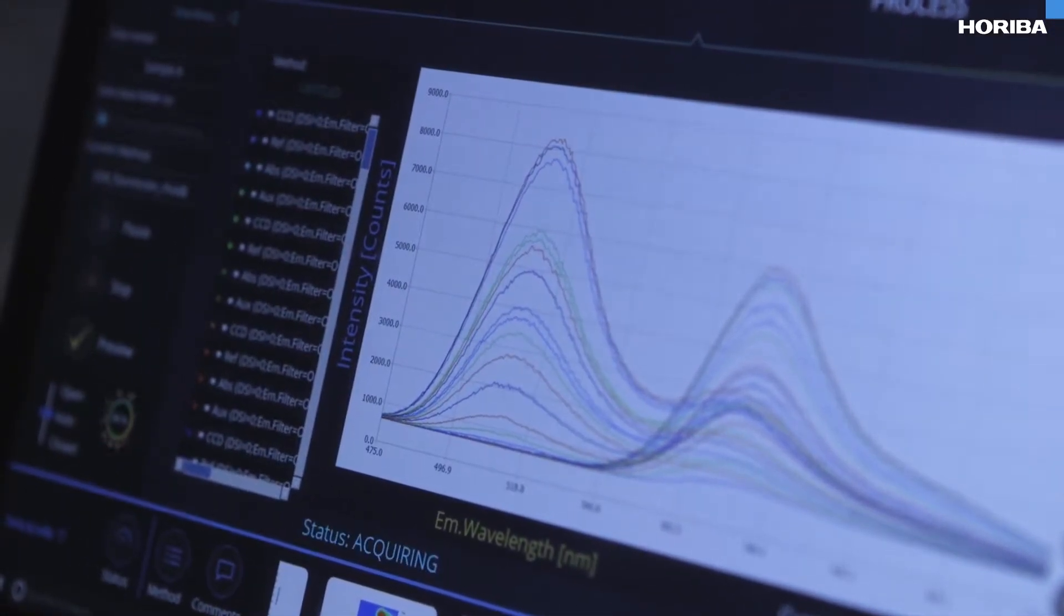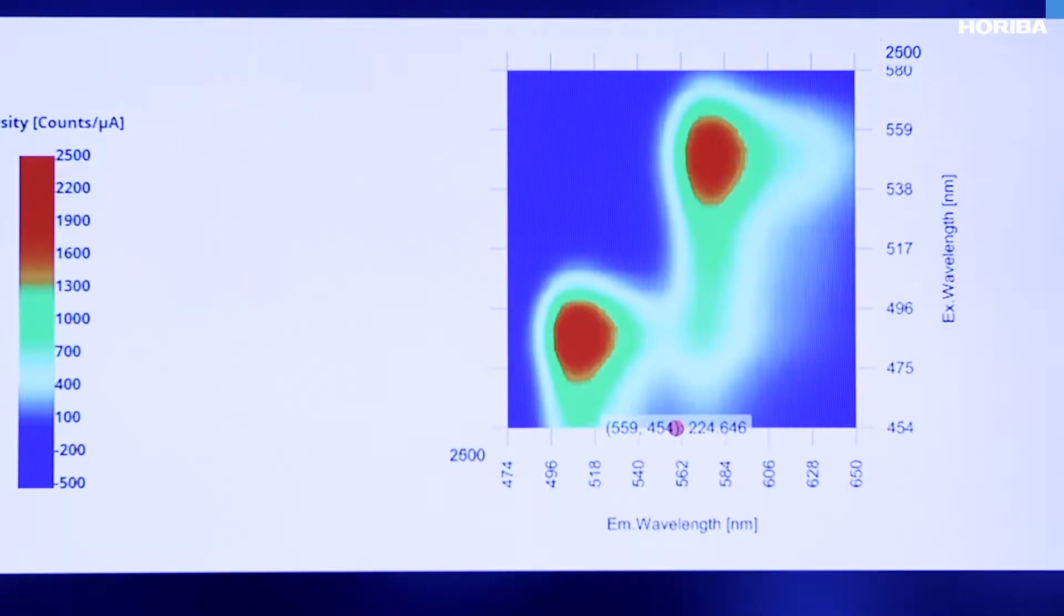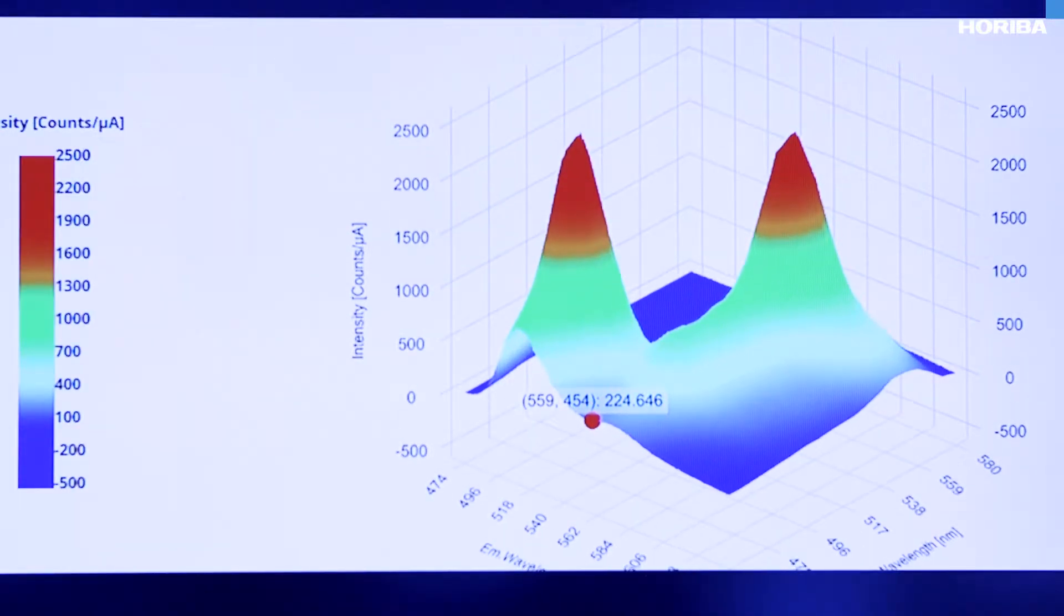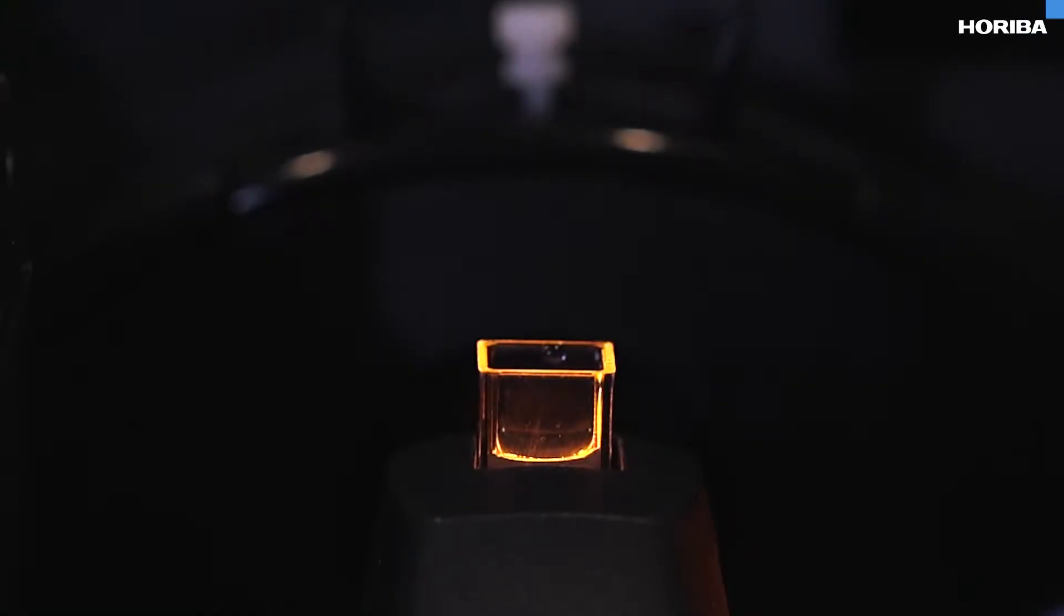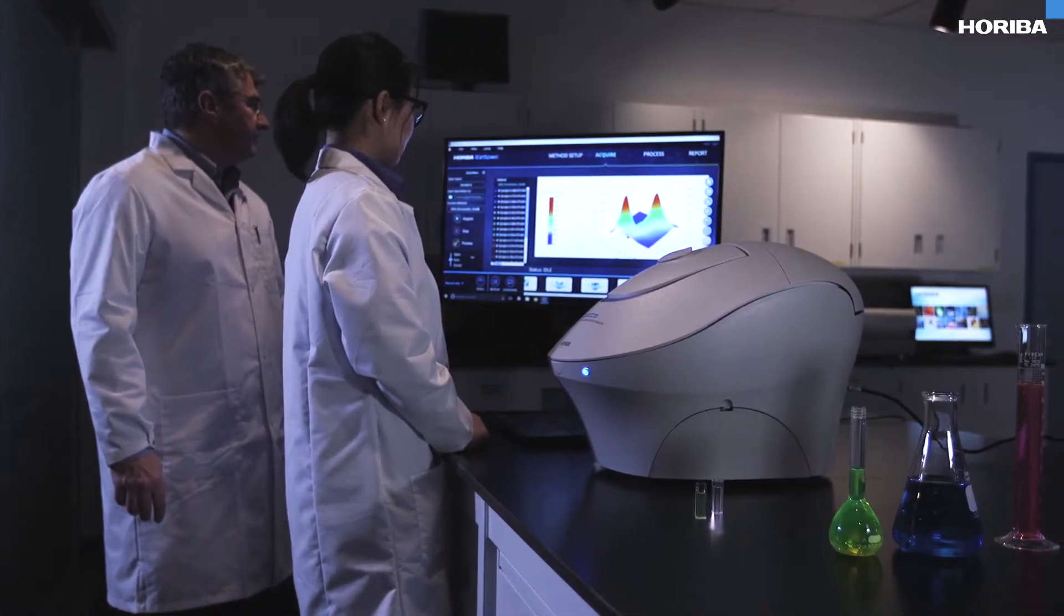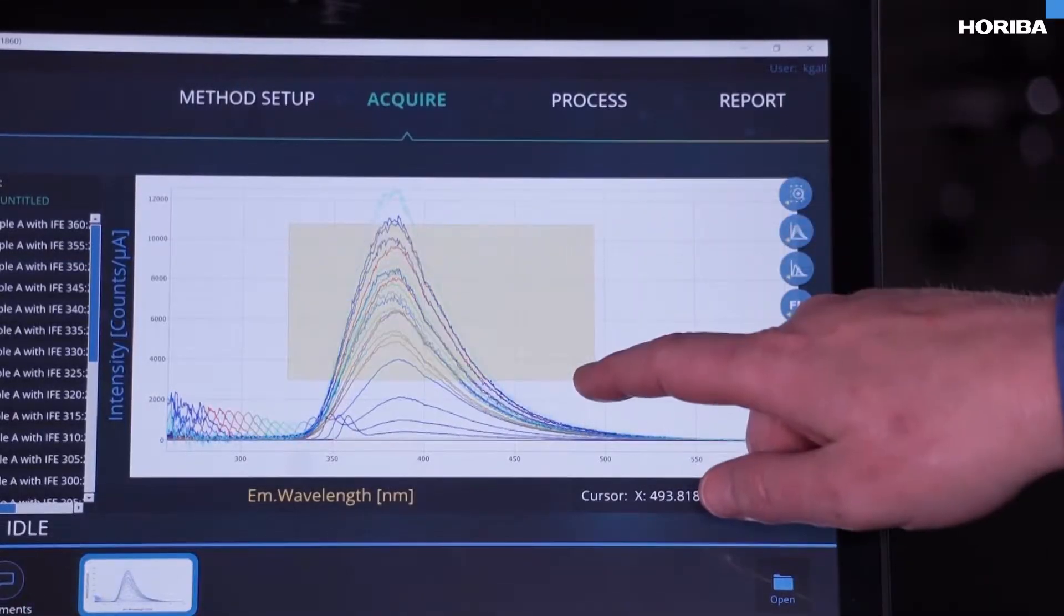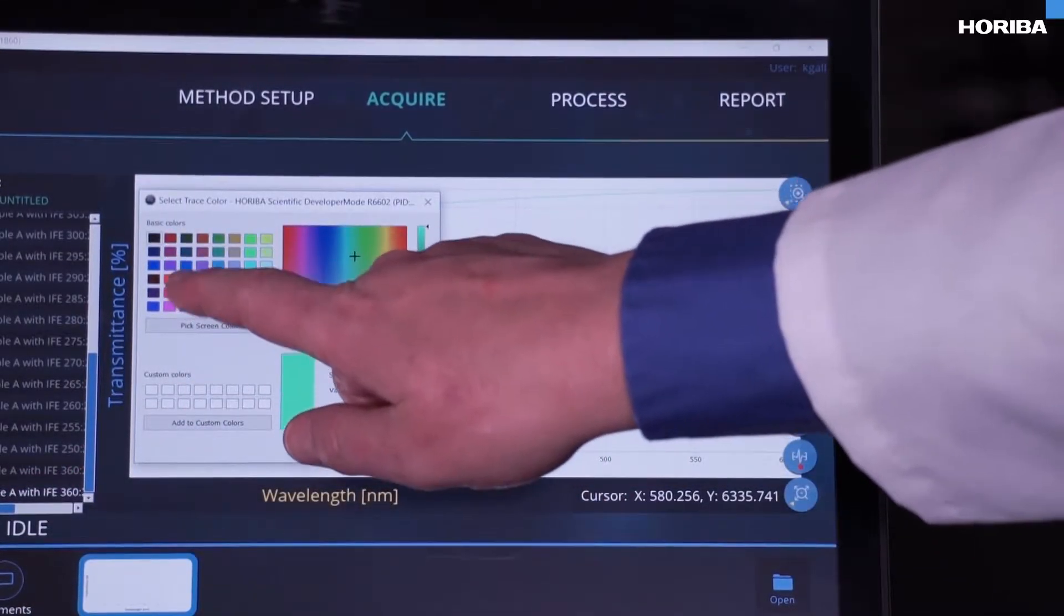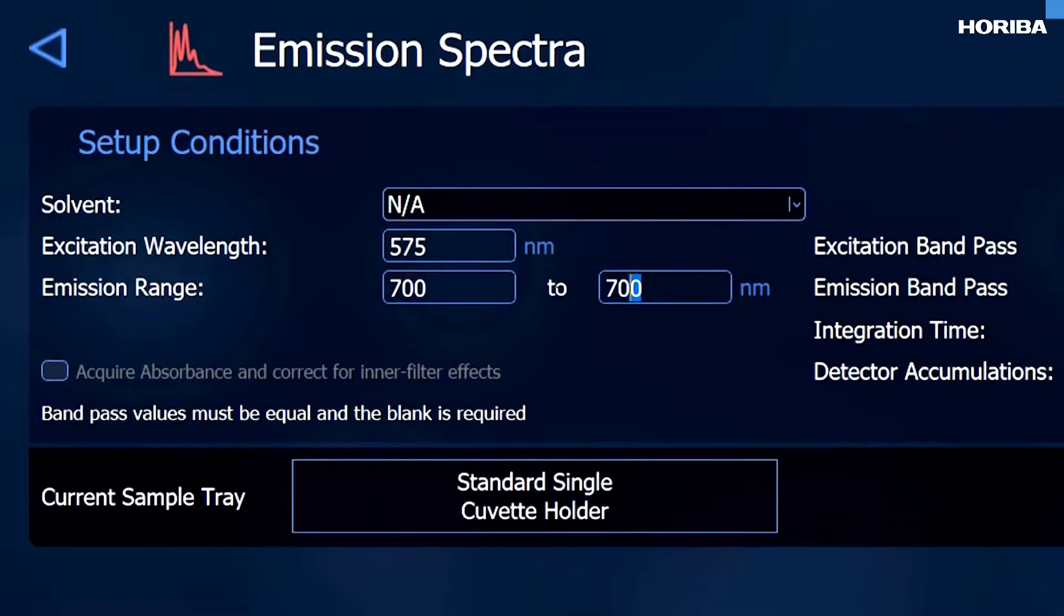Most benchtop fluorometers have an upper wavelength limit of, say, 650 nanometers, and some can be extended to 900 nanometers as an optional extra. With the Duetta, another benefit of having the CCD detector is the extended wavelength range to 1100 nanometers as standard.